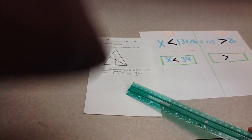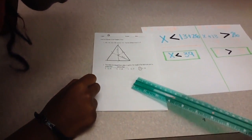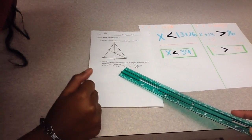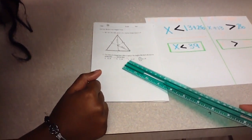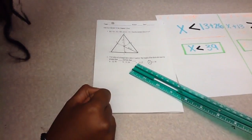If we're doing problem 2, two sides of a triangle have sides 13 and 26. The length of the third side must be greater than blank and less than blank.